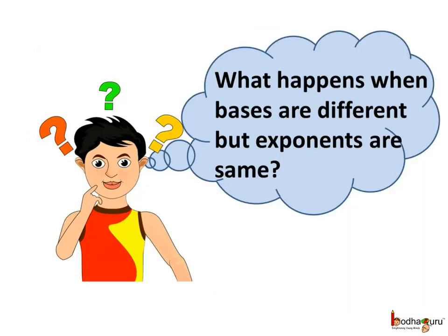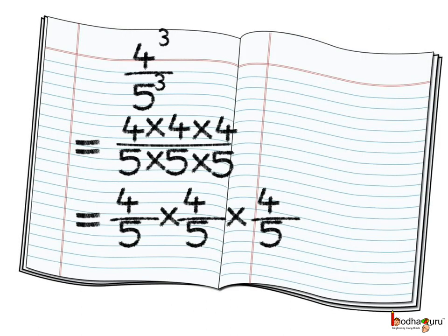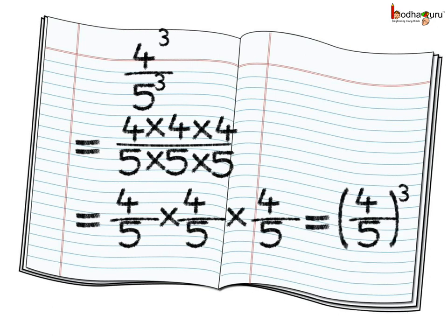You may wonder what happens when the bases are different but the exponents are same during division. Let us take an example: 4 to the power 3 divided by 5 to the power 3. We can write it as 4 into 4 into 4 divided by 5 into 5 into 5. Now we can represent this as the fraction 4 by 5.